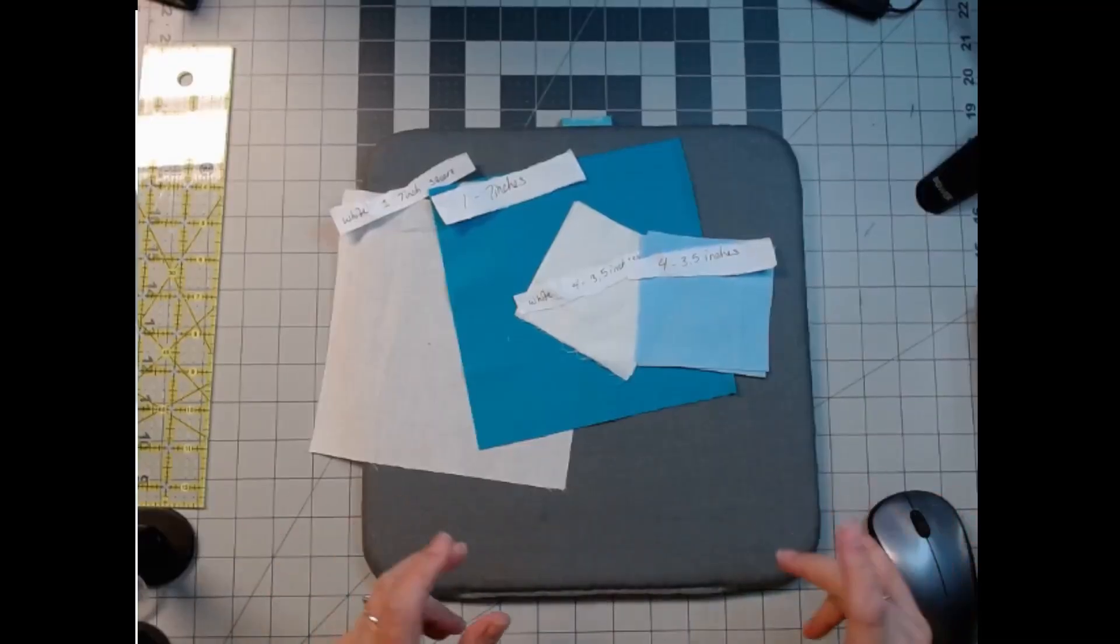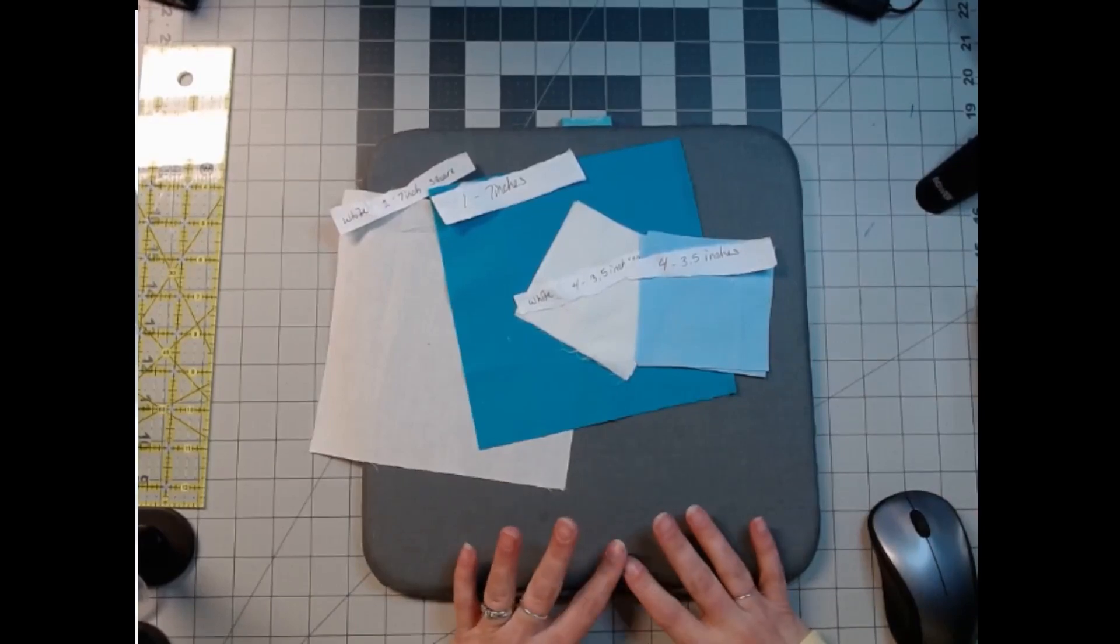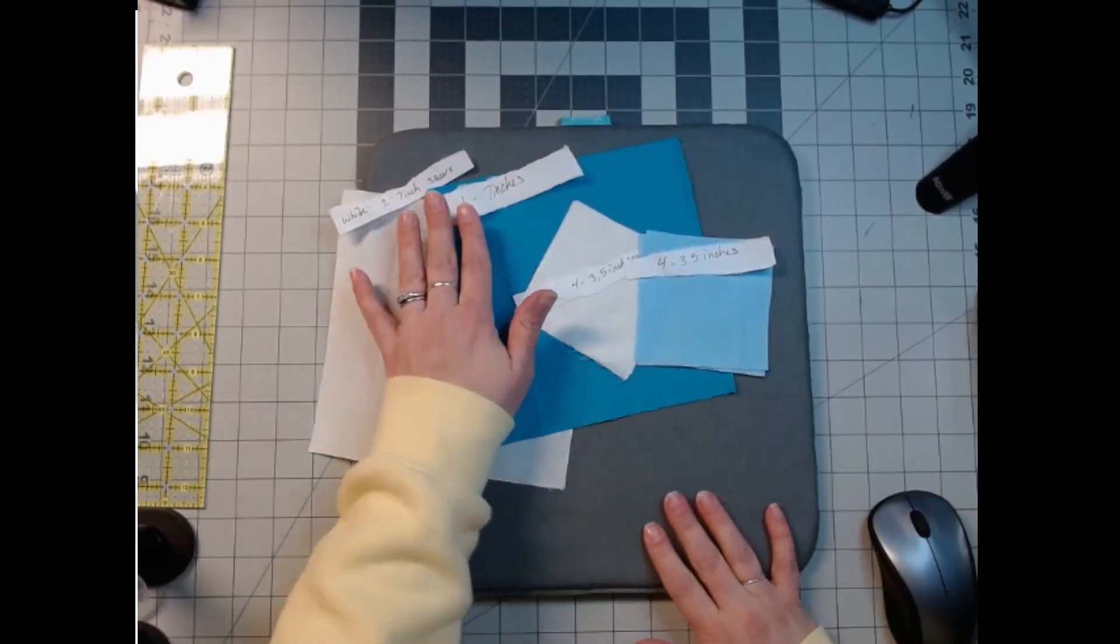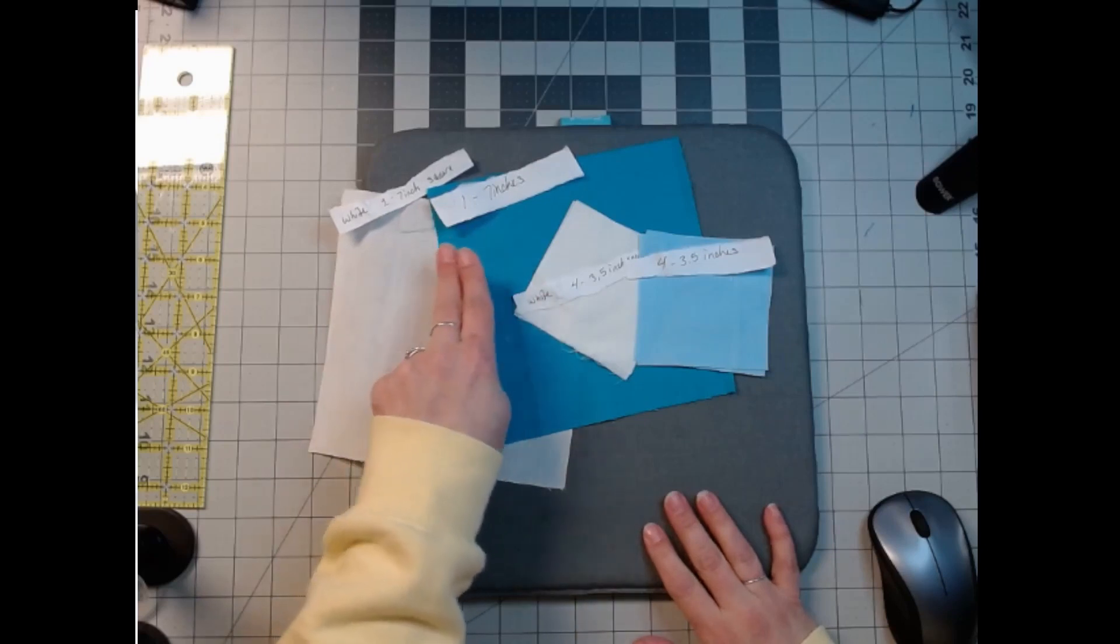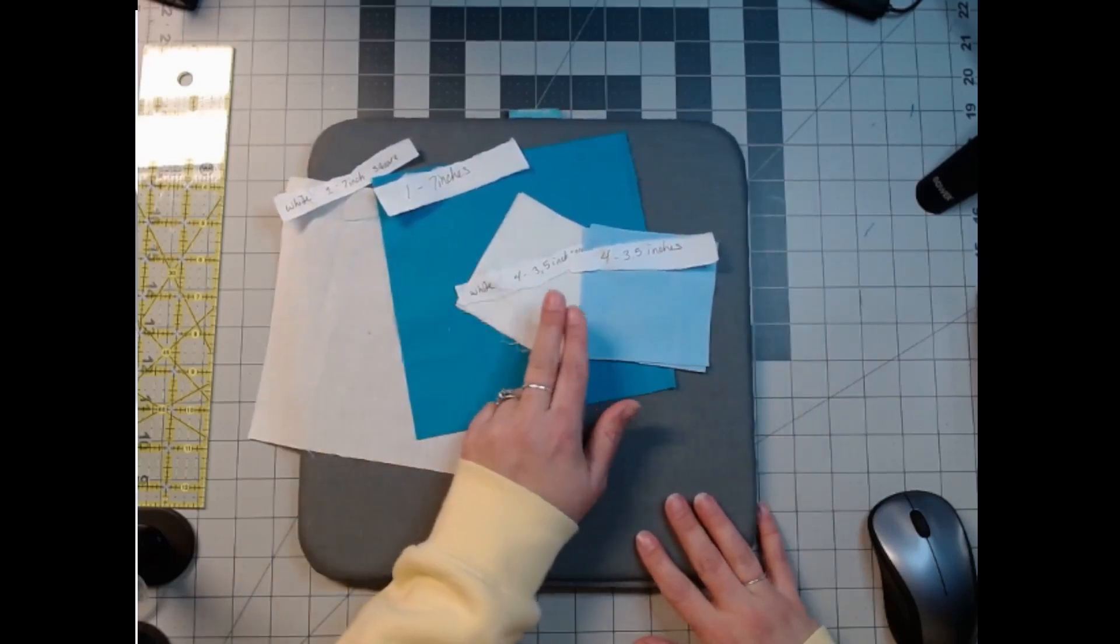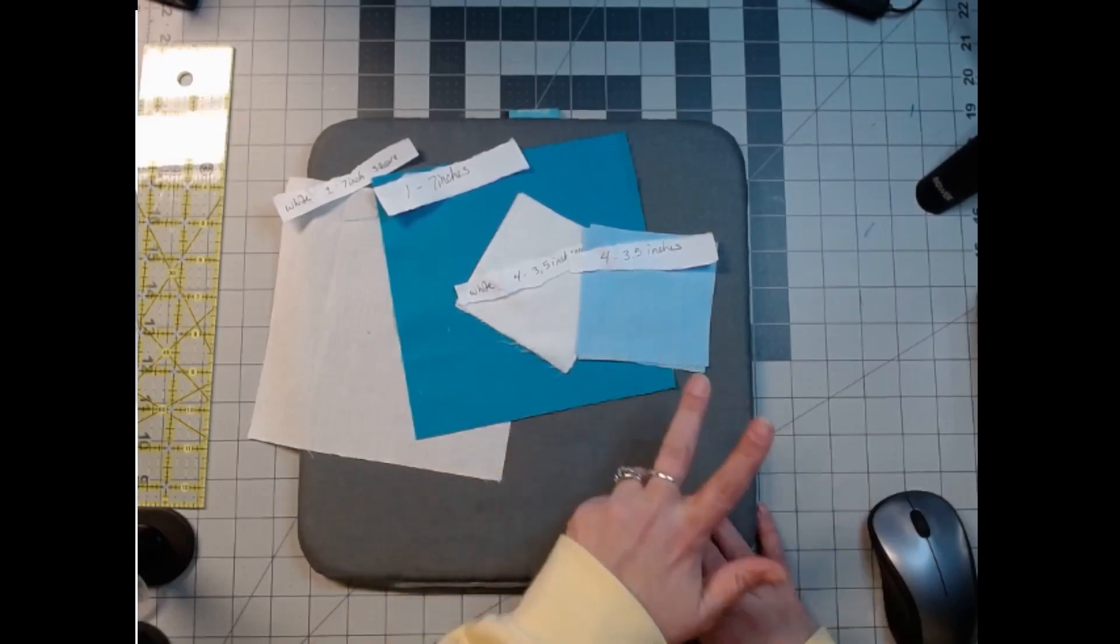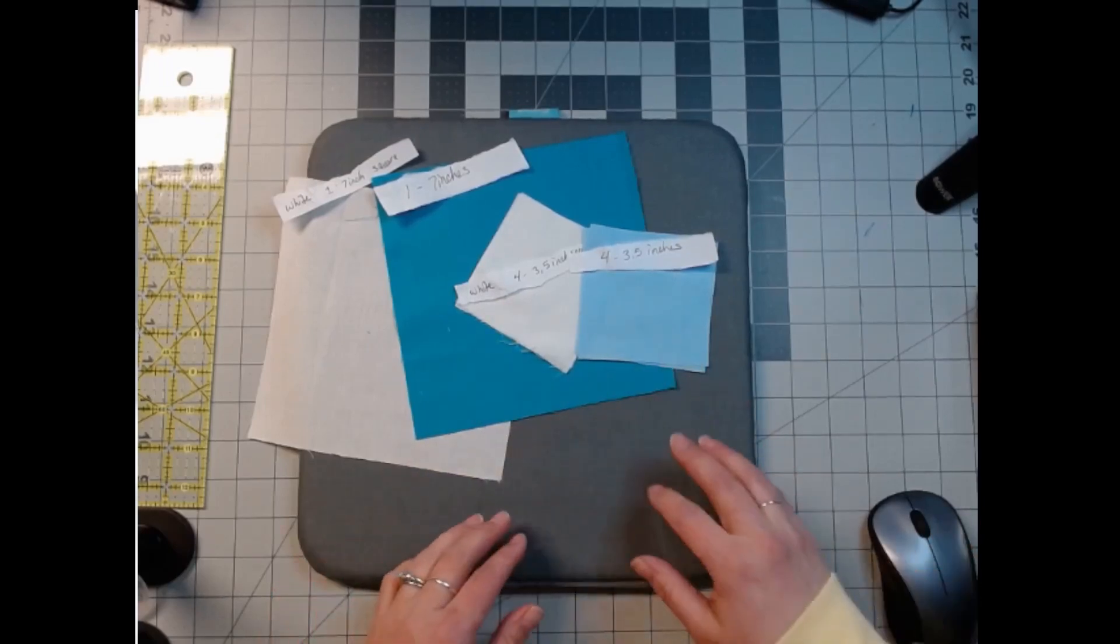Hello everybody, welcome back. Today we're going to do a block called the Sickle. For that, you're going to need two 7-inch squares—I chose one white, one blue—and you're going to need four white 3½-inch squares and four blue 3½-inch squares, or whatever color you choose.